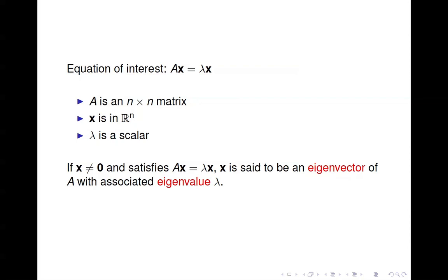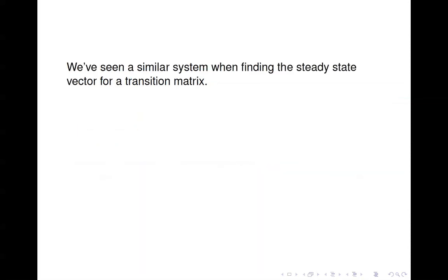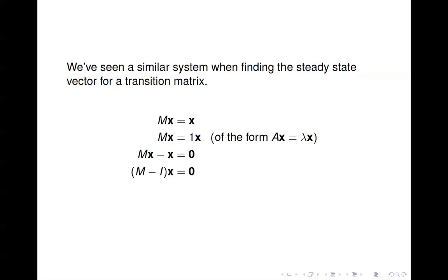We require that eigenvectors not be zero, because clearly the zero vector satisfies this equation, so we're looking for non-zero solutions. x would be an eigenvector and lambda an eigenvalue. We've seen a similar system to this when we were finding the steady state vector for a transition matrix back when we were looking at Markov chains.